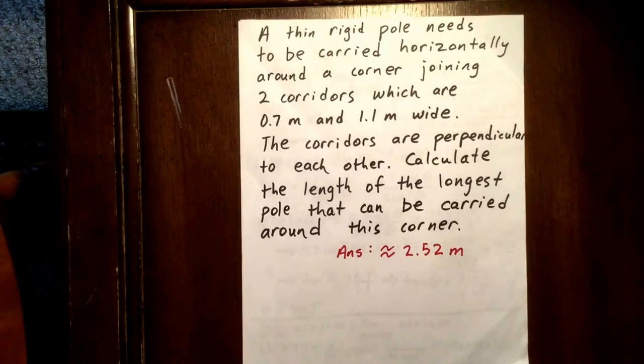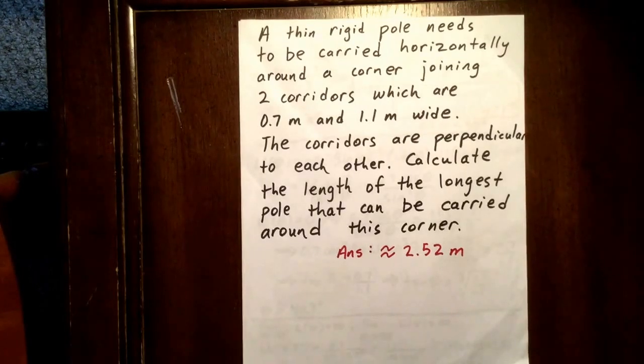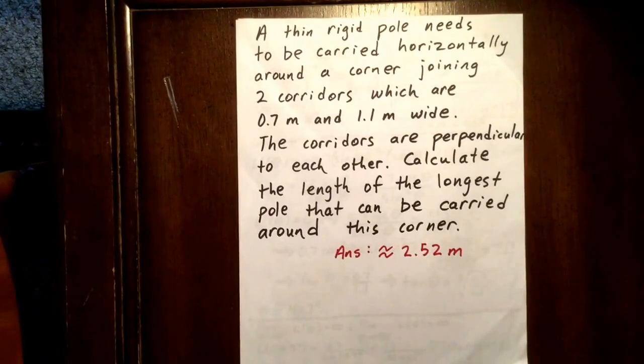For this question, we're going to use trigonometric derivative principles to optimize a situation. We have a thin, rigid pole needing to be carried horizontally around a corner with two corridors of differing widths. The corridors are 90 degrees to each other, so we want to calculate the length of the longest pole that can be carried around that corner.